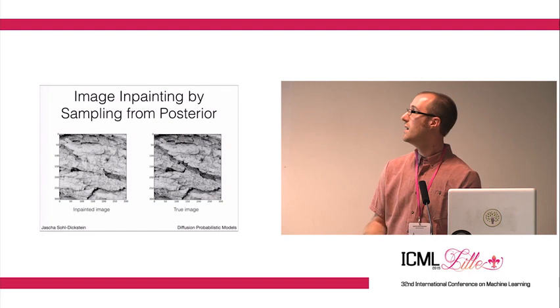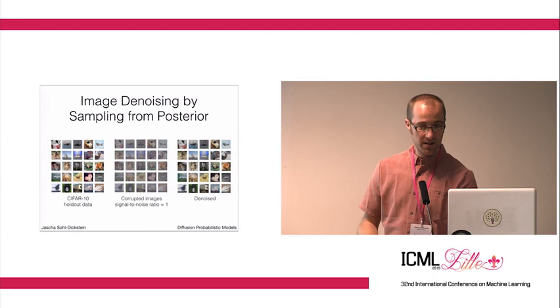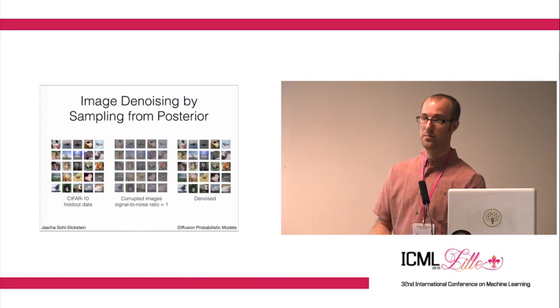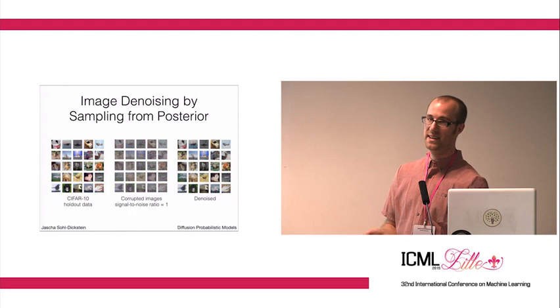On exactly the same thread, you can denoise, once again, by sampling from the posterior. Here there's a whole bunch of images from the CIFAR-10 data set. Here we've corrupted them with a signal-to-noise ratio of 1. And here we've taken a sample from the posterior distribution over the true CIFAR-10 image, given the corrupted image.